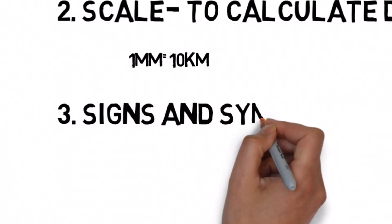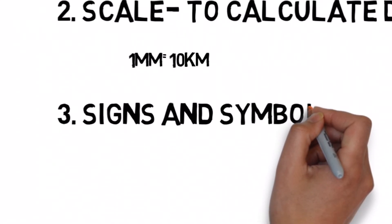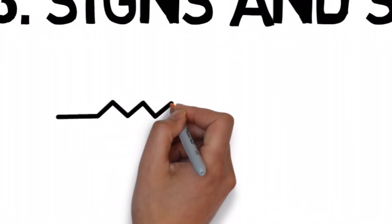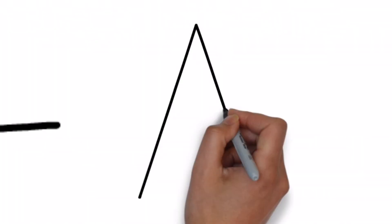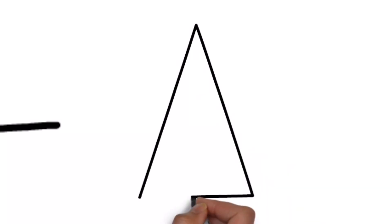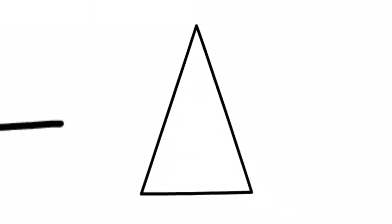The third element are signs and symbols. There are certain signs and symbols used while making a map and these are universally recognized by all countries. These signs and symbols are mentioned in the map key or legend.